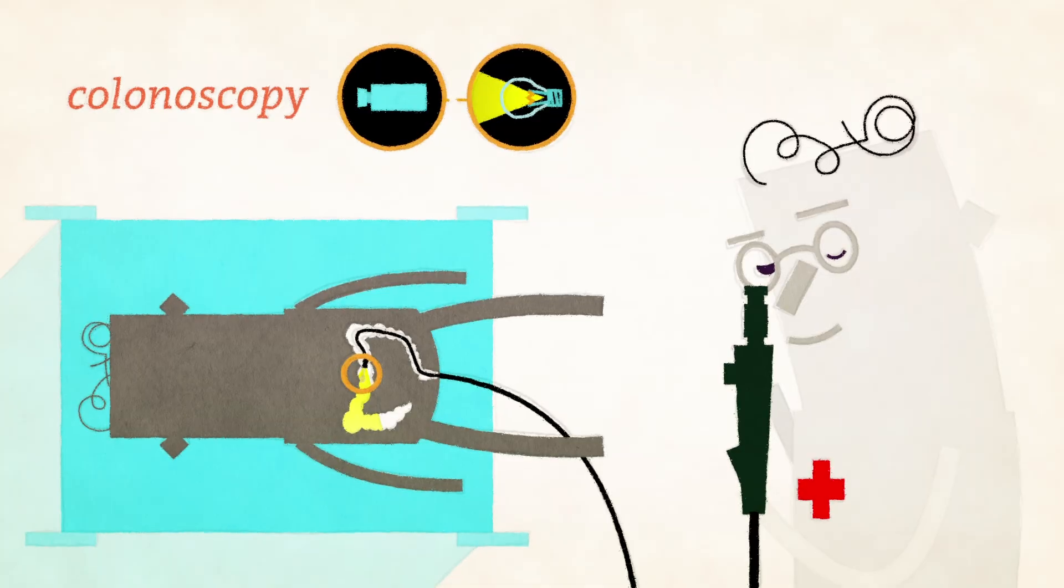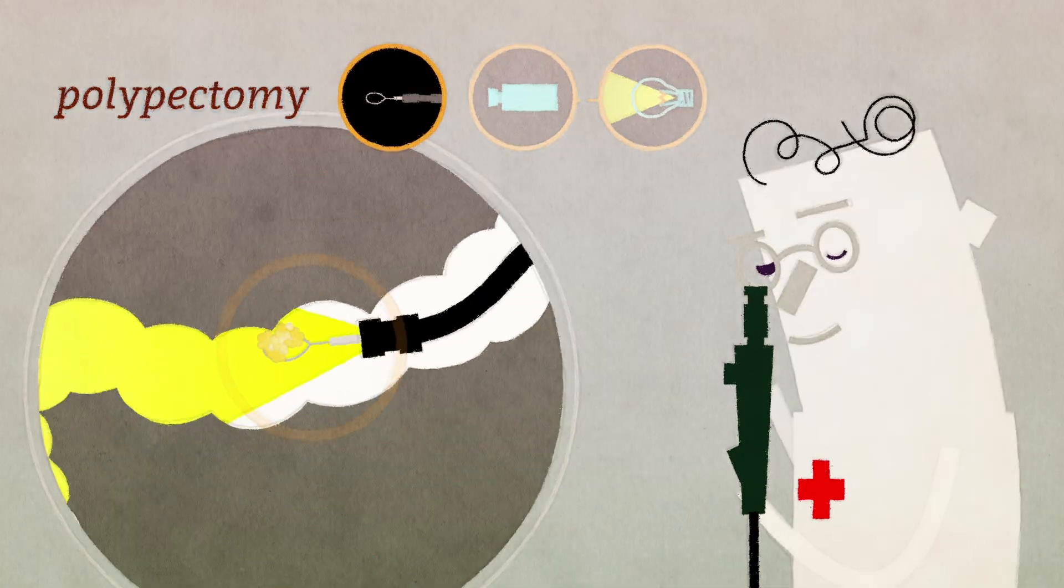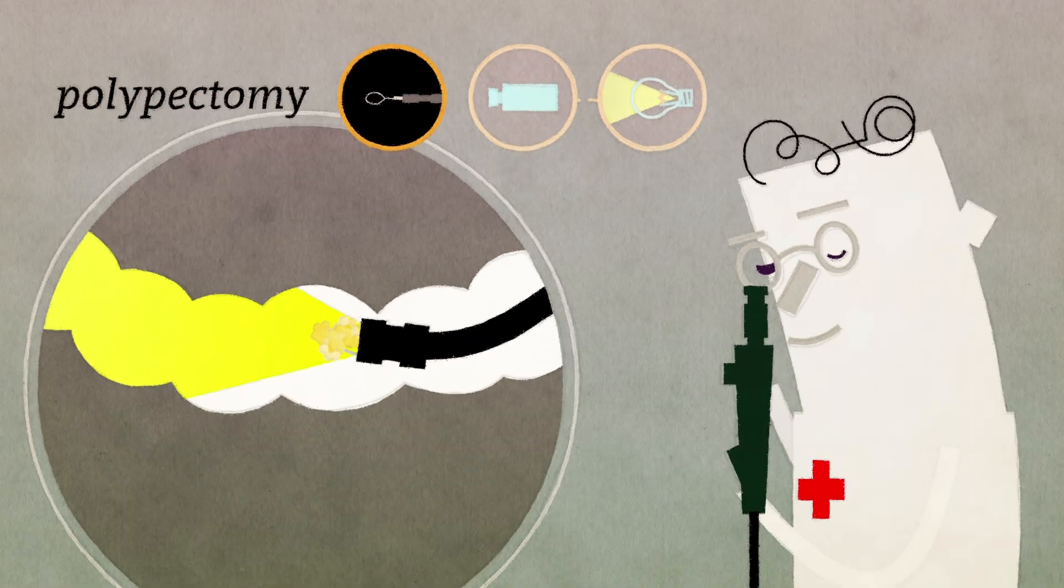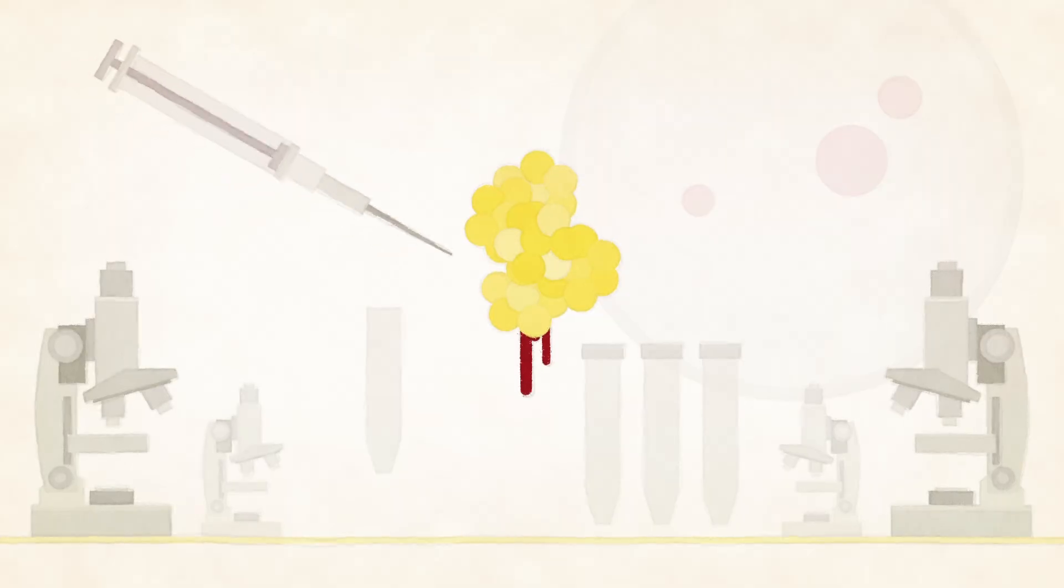If polyps are found, a doctor can do a polypectomy, a procedure that removes polyps from the colonic wall. Doctors can also then test the polyp for cancerous cells.